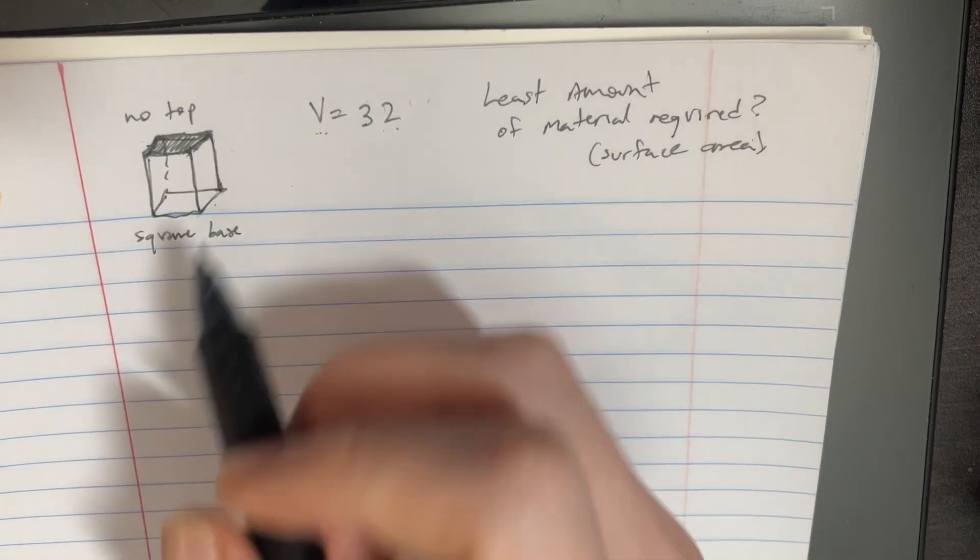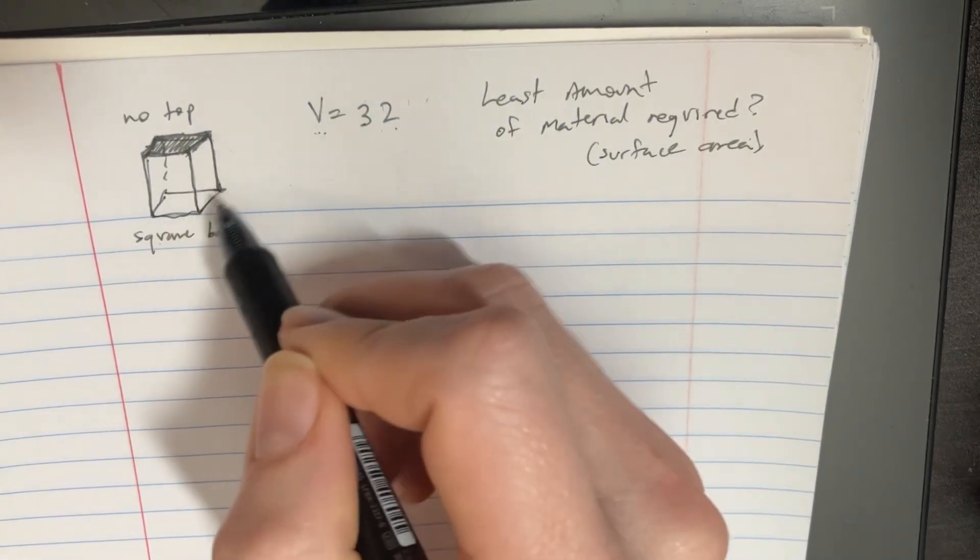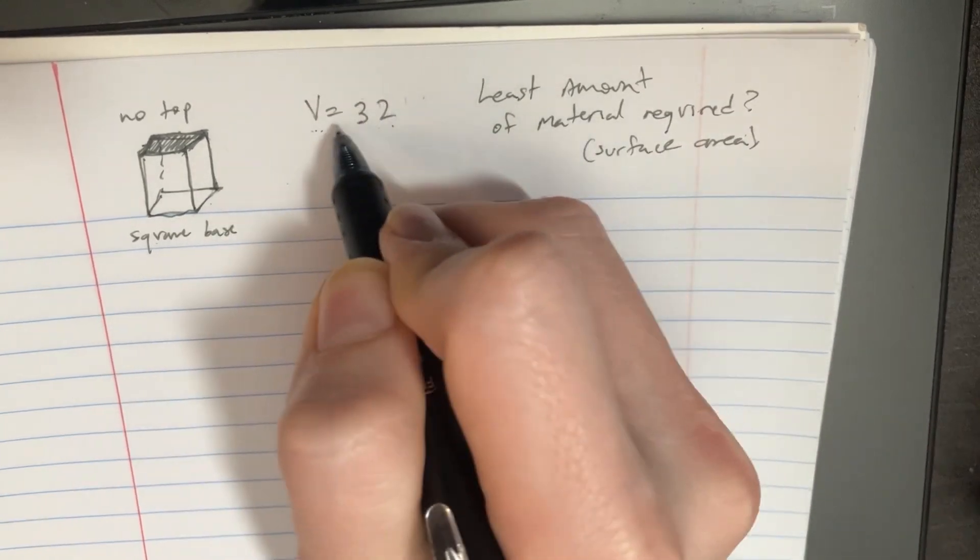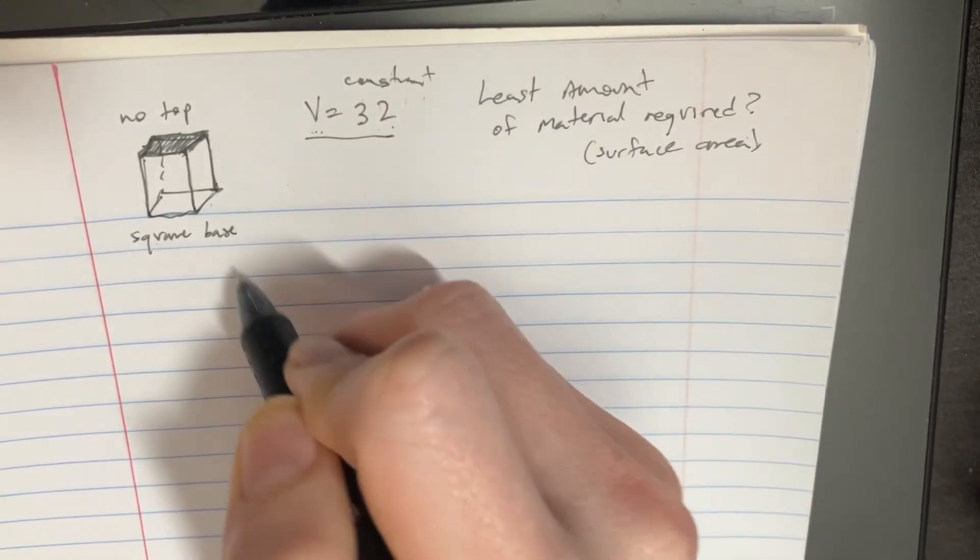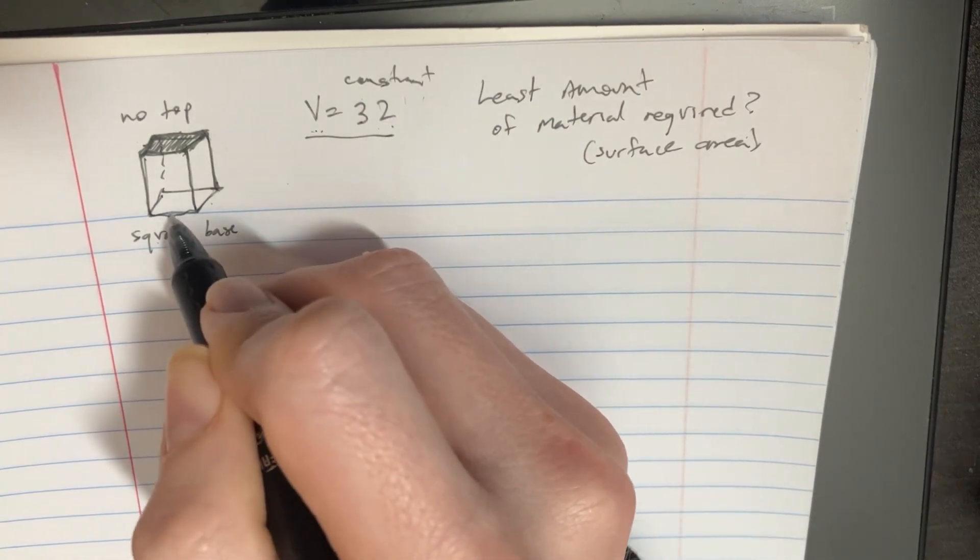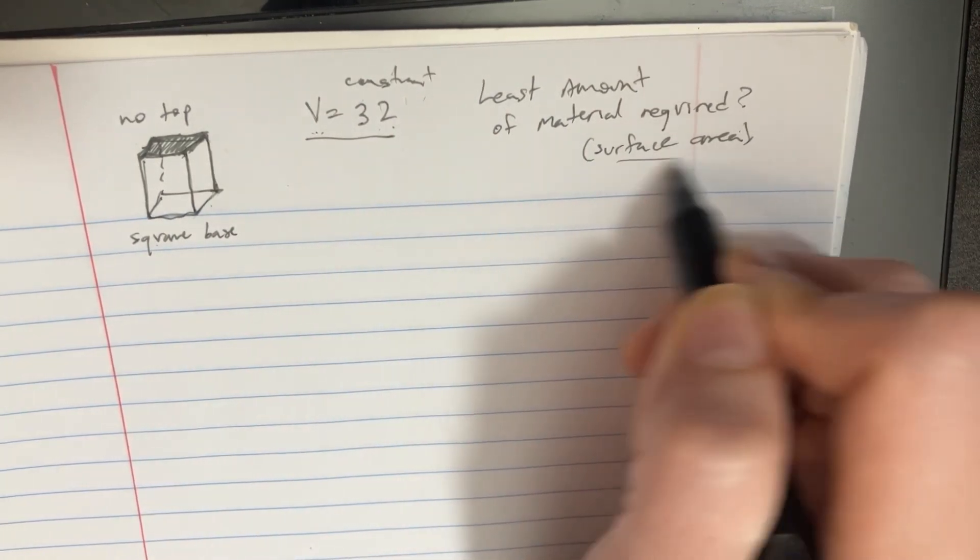We should try to set up a Lagrange equation for this as this would be our constraint, and we want to try to figure out the surface area, so this is kind of like the function.